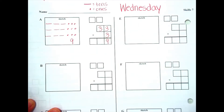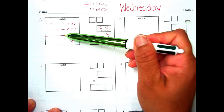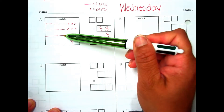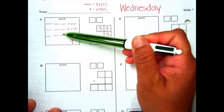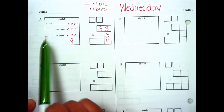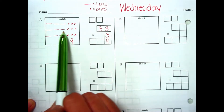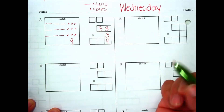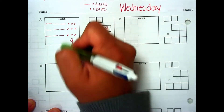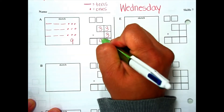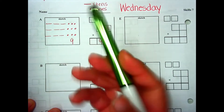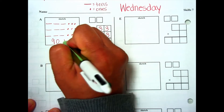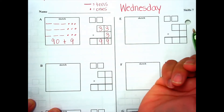Now let's look at our tens place. How many rows do we have? We have three rows. How many tens in each row? Three. So we have three rows with three tens in each. Let's count: 3, 6, 9 — we have nine tens in all. I'm going to put a nine in my tens place. That nine is the same as 10, 20, 30, 40, 50, 60, 70, 80, 90. So 90 plus 9 equals 99.